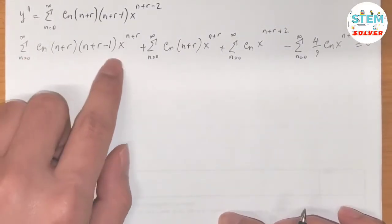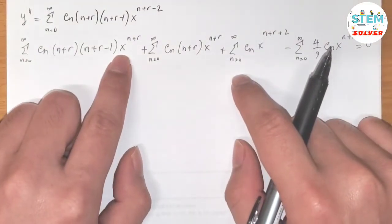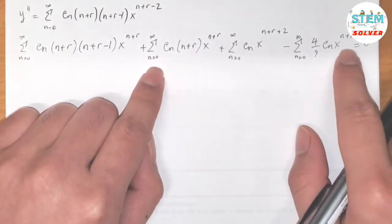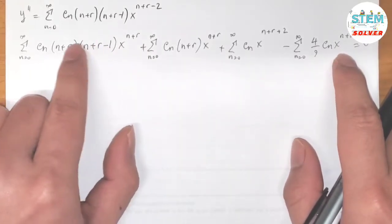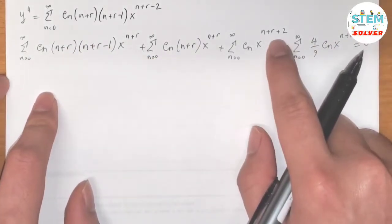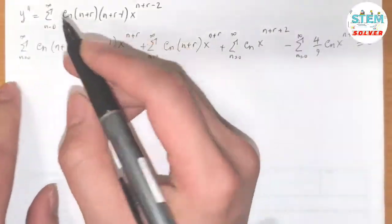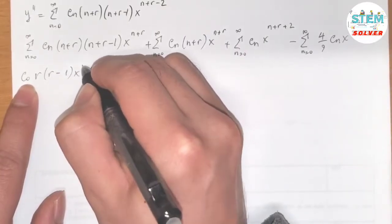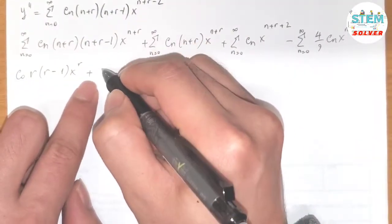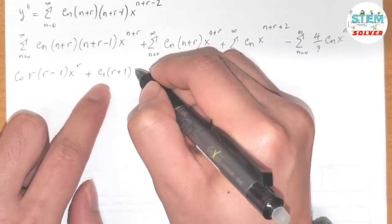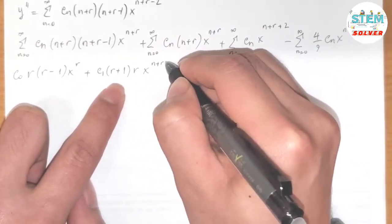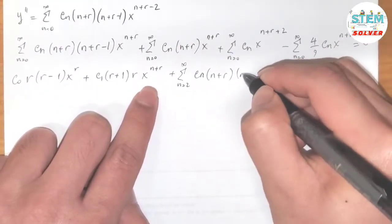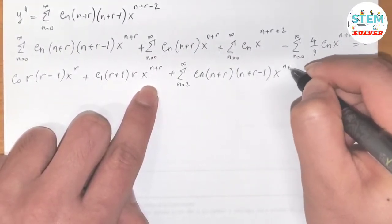Now let's look at the exponents. When n equals 0, each series starts at x to the r. So I need to write out terms from c0 x to the r. For the first series: c0·r(r−1) x to the r, plus c1·(r+1)·r x to the r+1, plus the power series from 2 to infinity of cn(n+r)(n+r−1) x to the n+r.